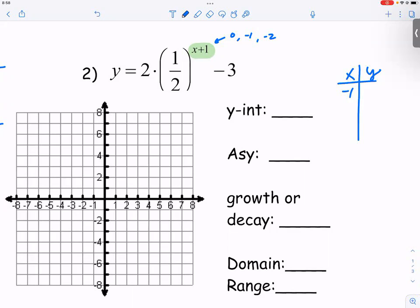One half to the zero power, it's one. One times two is two. Two minus three is negative one. So we have negative one, comma, negative one.